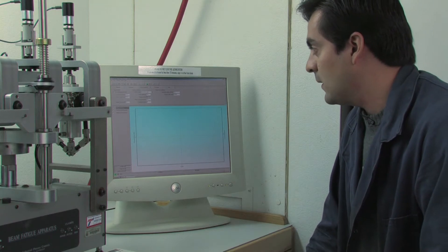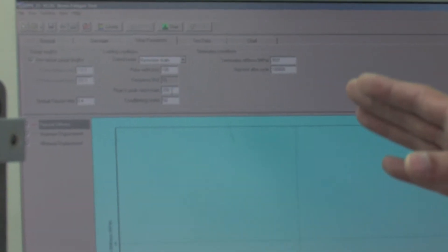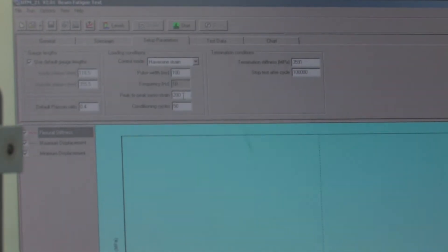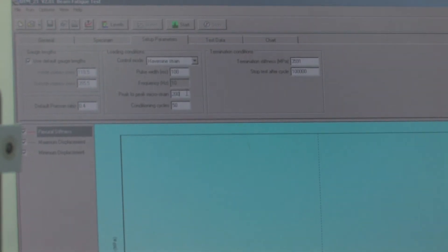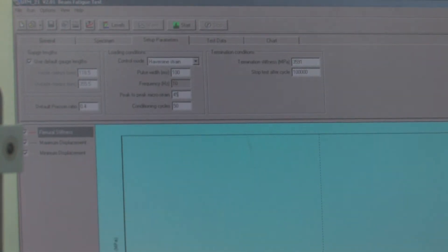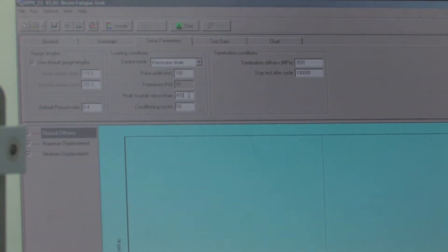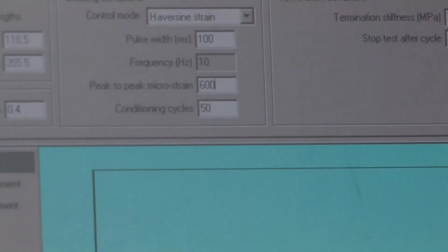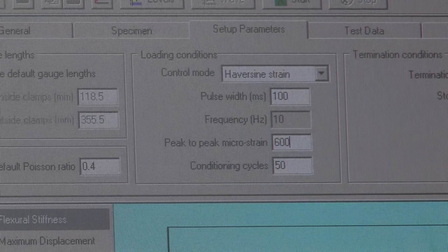We're using a strain control test, so we need to specify what is the peak strain that is going to be applied on each cycle of the test. Right now we're going to run 600 microstrains. As you can see, this line says conditioning cycles.